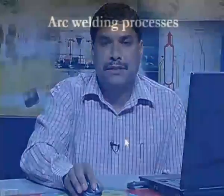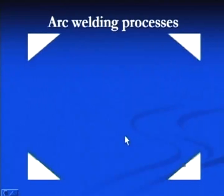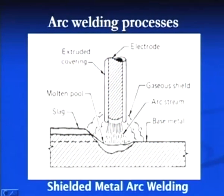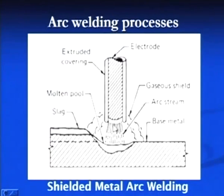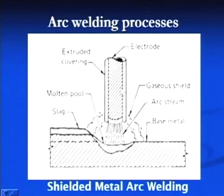The arc welding based processes are many, and some of the arc welding processes of commercial importance are as follows. The first one is shielded metal arc welding, in which the joint is produced by heat developed from an arc. The arc is established between the consumable electrode and the base metal, and the molten metal is then allowed to solidify.